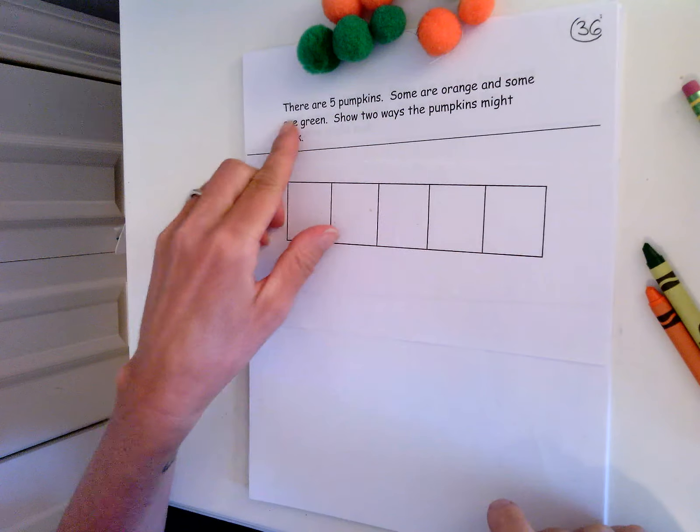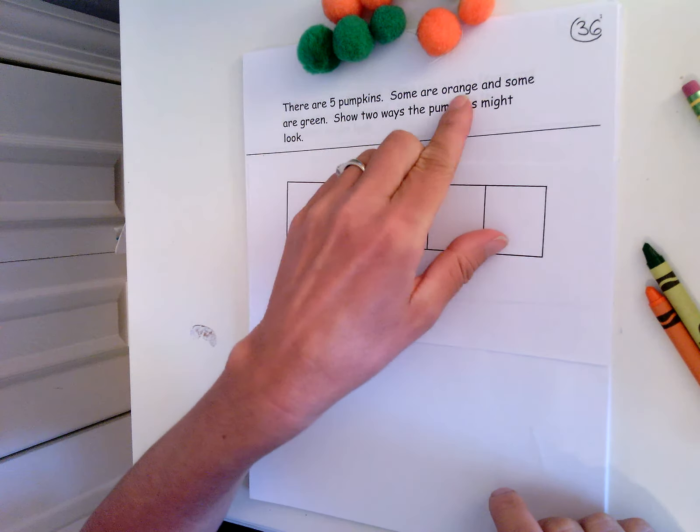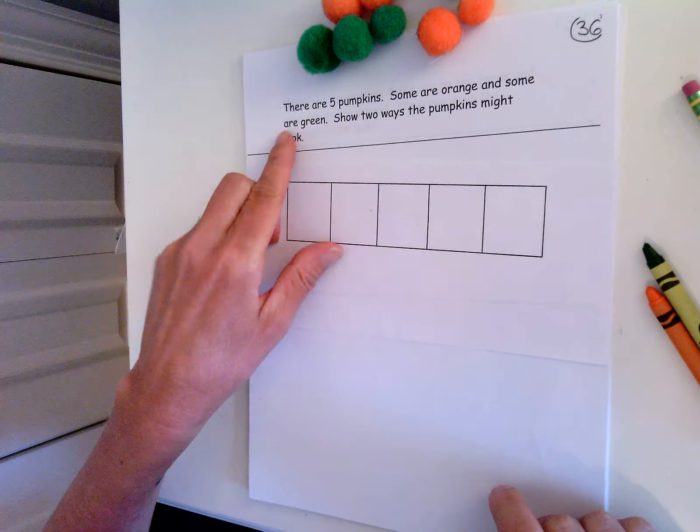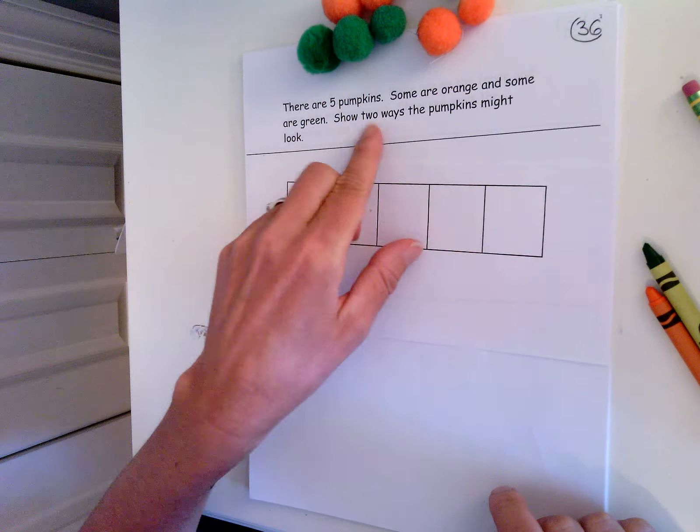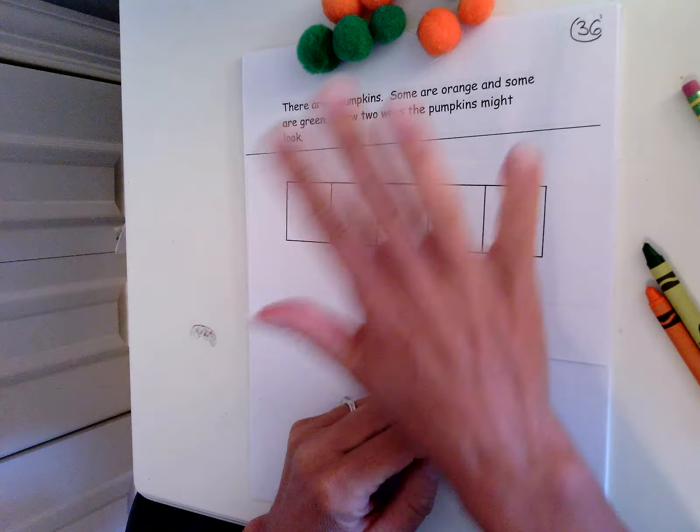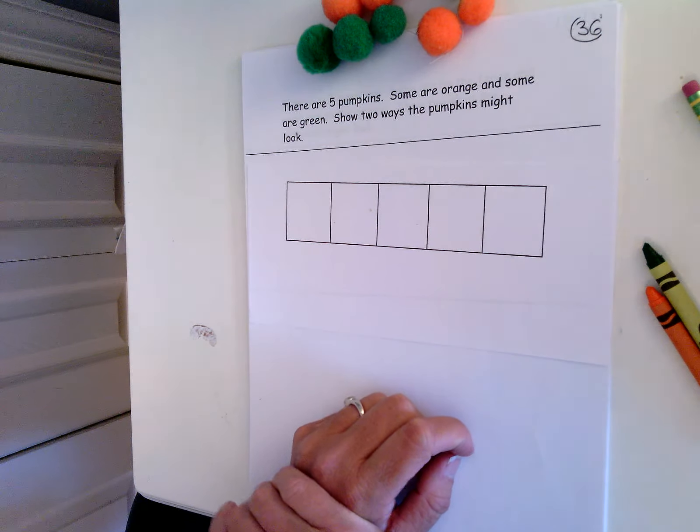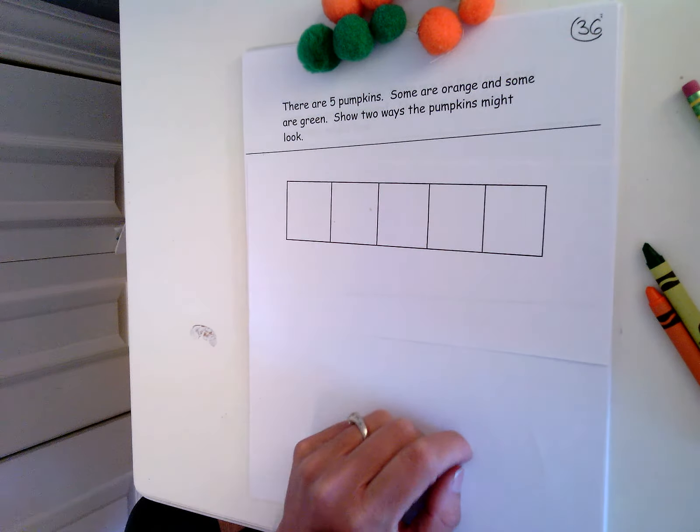So in this problem, there are five pumpkins. Some are orange and some are green. Show two ways the pumpkins might look. So there's five pumpkins, some are orange, and some are green. Show two ways the pumpkins might look.